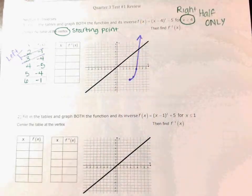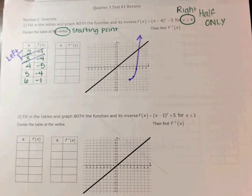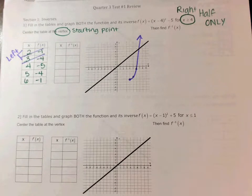The points that are left over: four, negative five is here; five, negative four is here; six, negative one is here. There's your graph. Remember, it's always one half or the other — never both halves.